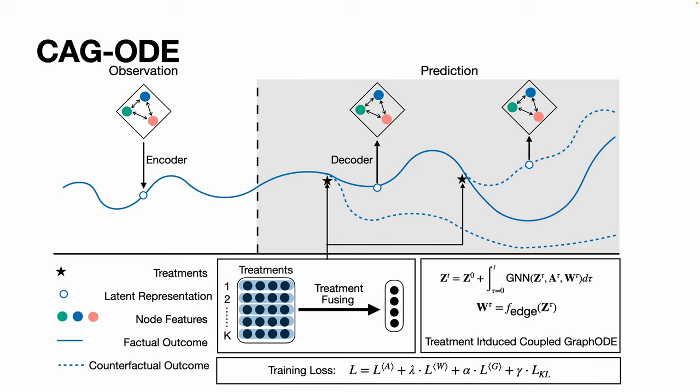Here comes our model, CausalGraph ODE. The model adopts the encoder-ODE-decoder architecture to capture the continuous interaction among agents. CG-ODE can perform causal reasoning by injecting treatment effects into the ODE functions, which we call the treatment-induced CausalGraph ODE. The multi-treatment effects are captured by a neural treatment fusing module that assigns temporal weights to the treatment using an attention mechanism.